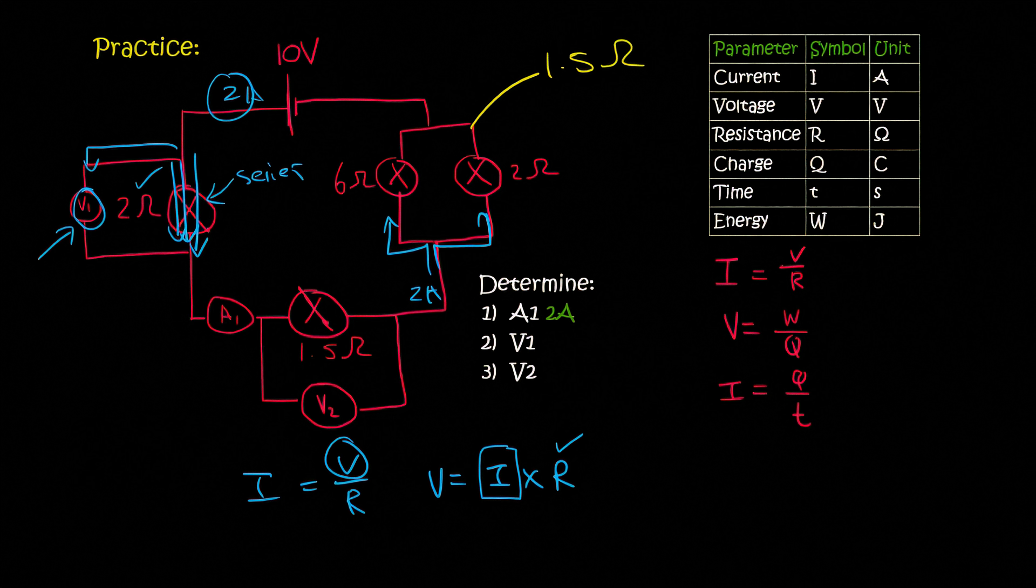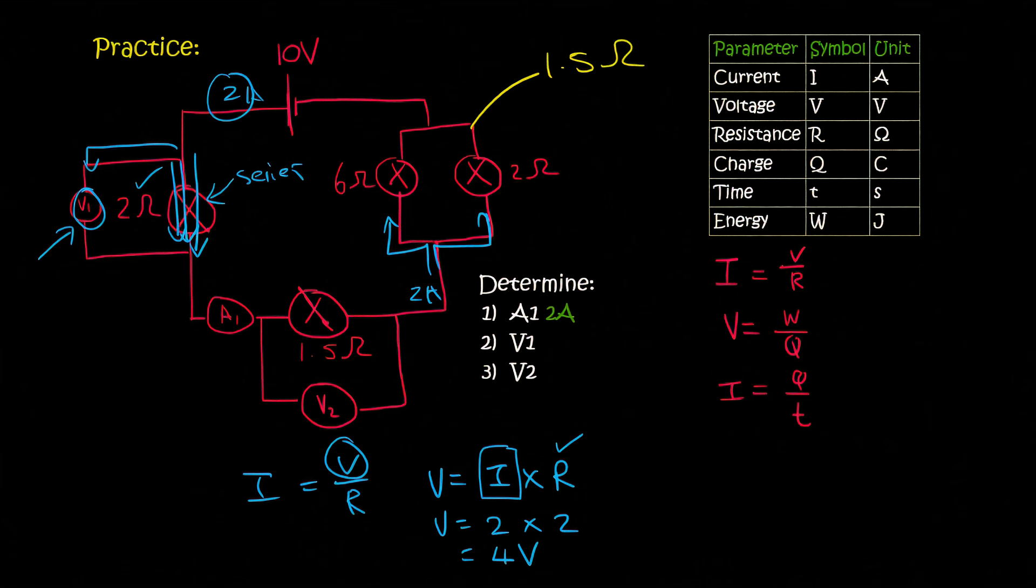It's only when we split up into parallel, that's when you have to be careful with your current. So we can use 2 amps. And so we can get the voltage by saying 2 multiplied by the resistance over there, which is also 2, and that's going to give us 4 volts. So V1 is 4 volts.